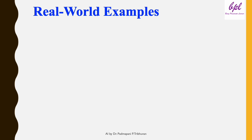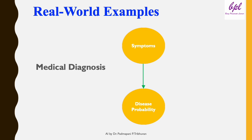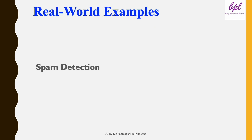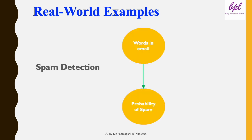Bayesian networks are widely used in real-world applications. For example, in medical diagnosis, symptoms like fever or cough help predict the likelihood of a disease. In weather prediction, we can model relationships like cloudy → rain → wet grass. In spam detection, the words or phrases in an email are used to predict the probability that the email is spam. These examples demonstrate how Bayesian networks simplify complex, uncertain systems into clear and manageable models.